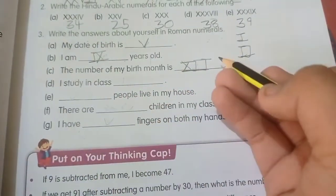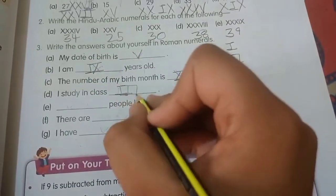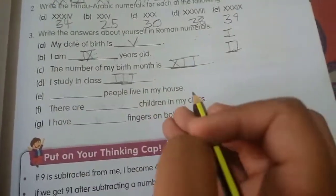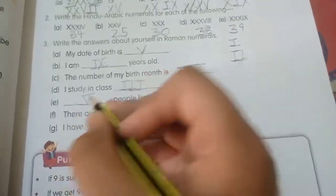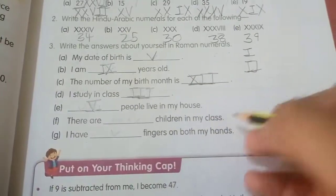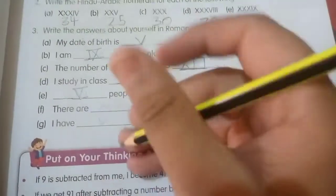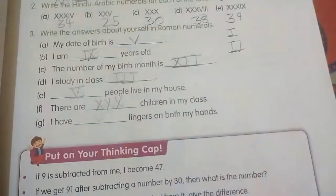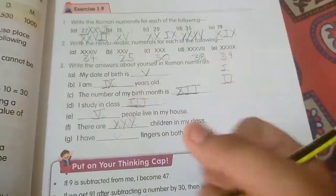I study in class - whatever class you study in, you have to write it. Because you study in the third class, I write III. The number of people that live in my house - I will write the number. The number of children in my class - you write the number in your class.